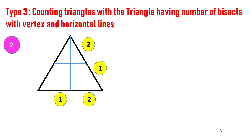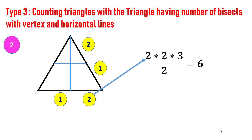The trick is to number the vertical and horizontal parts of the figure. Here horizontally there are two parts and vertically there are two parts. Multiply the number of horizontal and vertical parts, which yields four. Then multiply by one more than the horizontal parts — horizontal parts is two, so multiply by three, which yields 12. Divide by two, which gives the number of triangles: six.